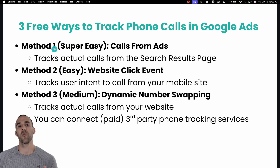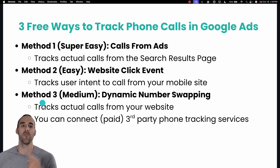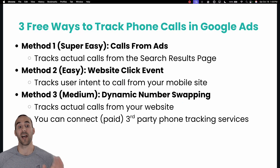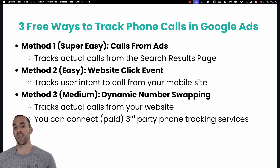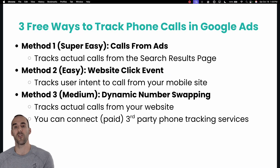Method one is super easy — calls from ads — and that tracks actual calls from the search results page when they click your advertisement. Method three is dynamic number swapping, which tracks calls on your website by having a forwarding number visible to people who clicked your advertisement and landed on your website; when they call it, it counts as a conversion as long as it exceeds the minimum time you set, and you get nice reporting. And then method two is the website click event, which simply tracks a conversion if someone clicks to call directly on your phone number listed on your website.